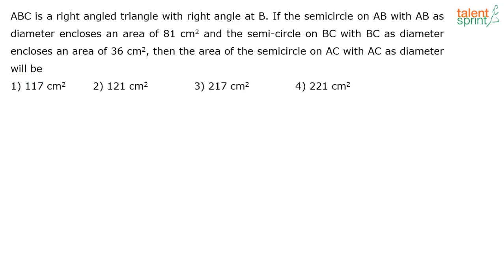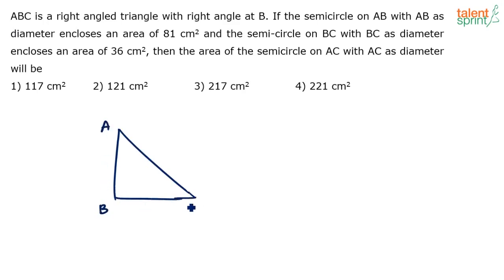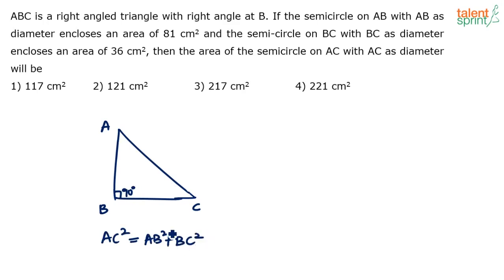Let's try it out. I think we have to draw the figure carefully as usual. ABC is a right angle triangle with right angle at B. So let's draw a right angle triangle ABC — this is A, B and C — with right angle at B, 90 degrees. A right angle triangle means the Pythagorean theorem holds true: AC squared is equal to AB squared plus BC squared.